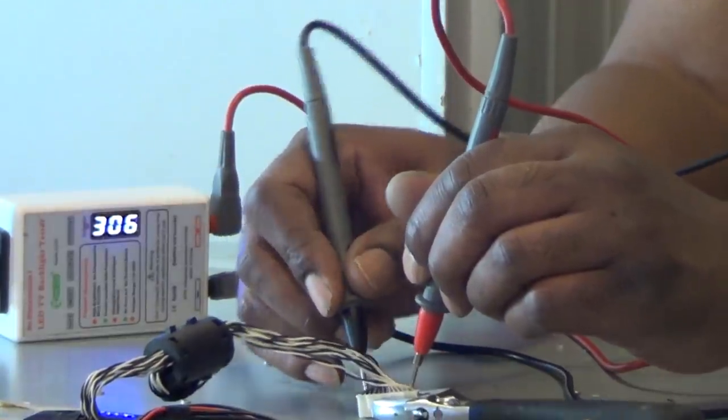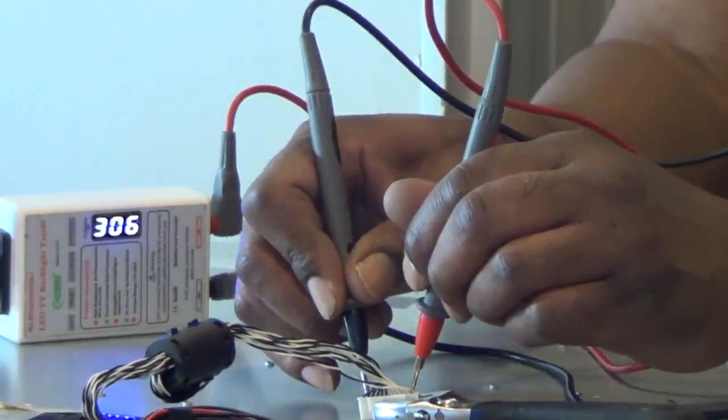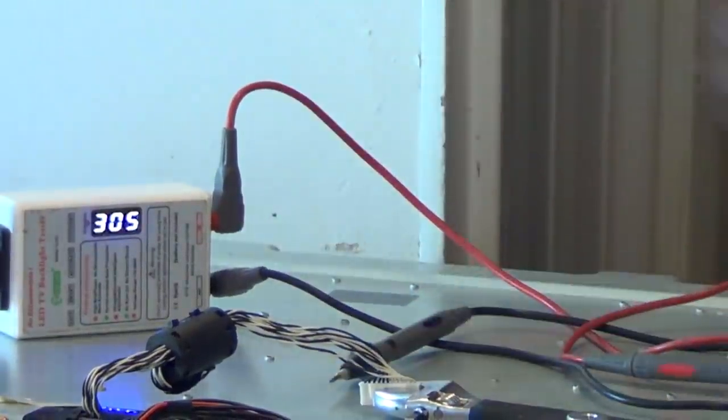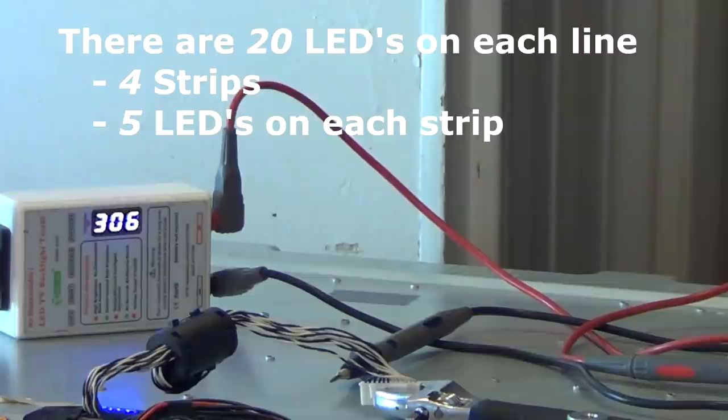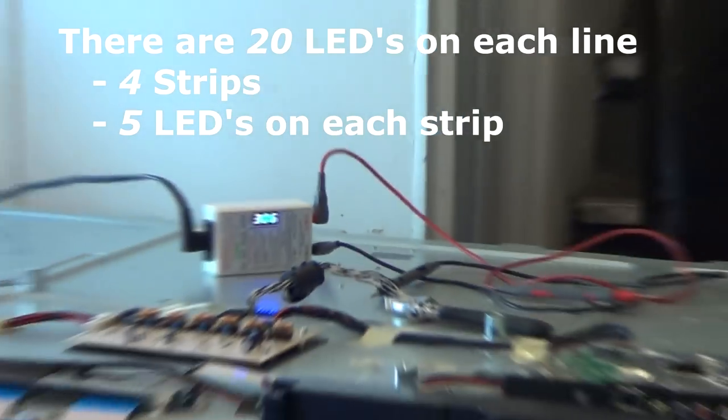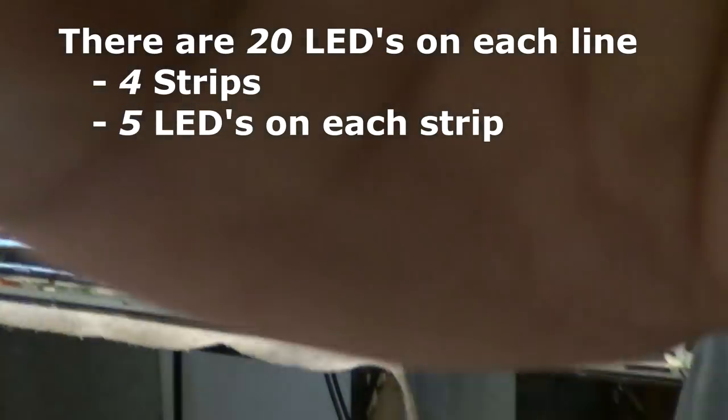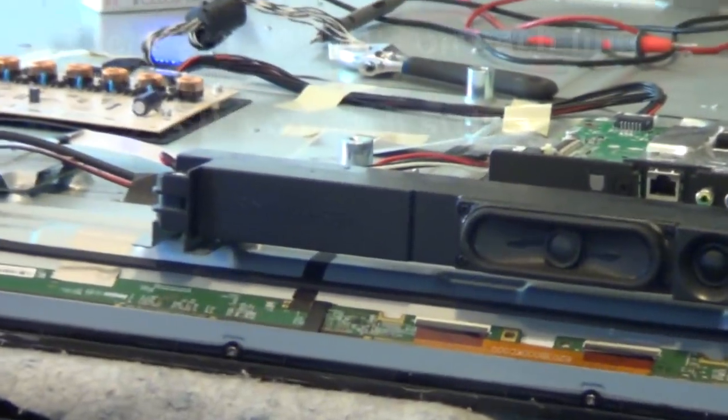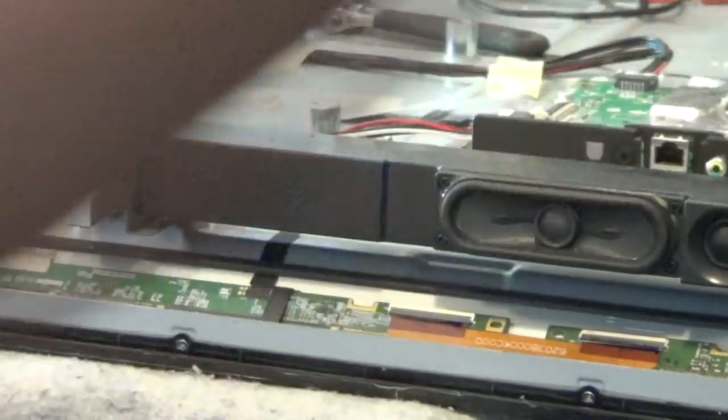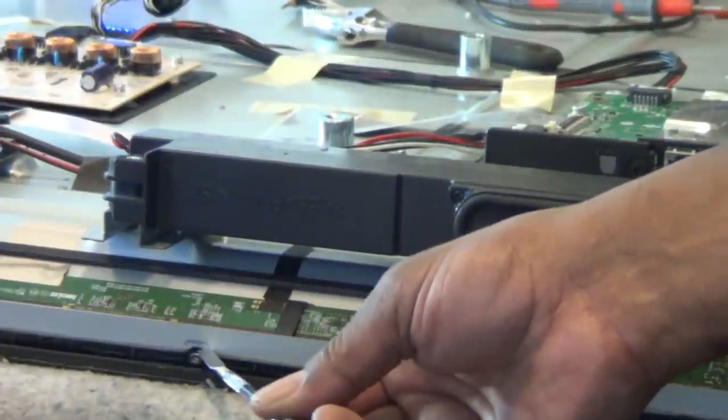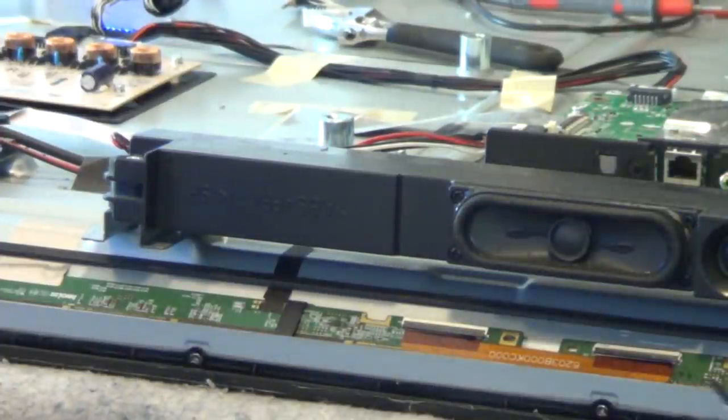So we definitely have an open line, which is line two. So that's pretty much a good sign. Just one line is bad, so it's probably just one LED. So we'll proceed to go ahead and disassemble this TV all the way to the LED strips.